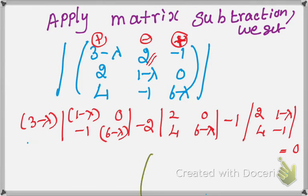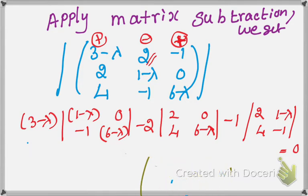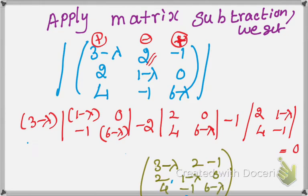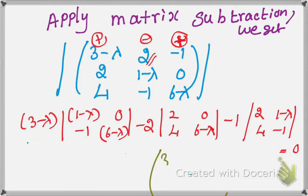So the full determinant expansion: (3-λ) times [(1-λ)(6-λ) - 0·(-1)], minus 2 times [2(6-λ) - 0·4], plus (-1) times [2·(-1) - (1-λ)·4] = 0. Using the 2×2 determinant formula ad - bc.